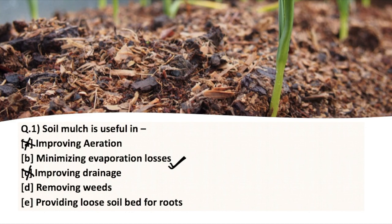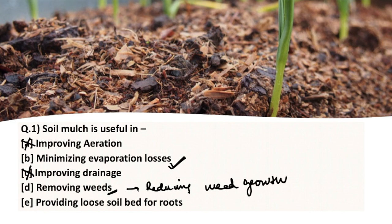Drainage cannot be improved because of soil mulching, so that option is incorrect. The next option is removing weeds — this is a partially correct statement. We cannot remove weeds completely with soil mulching, but we can restrict or suppress weed growth. So rather than 'removing,' it should be 'reducing weed growth.' Therefore, removing weeds is not the correct agenda. Providing a loose soil bed for roots is also incorrect, as soil mulching provides a more compact bed. The answer is minimizing evaporation losses.